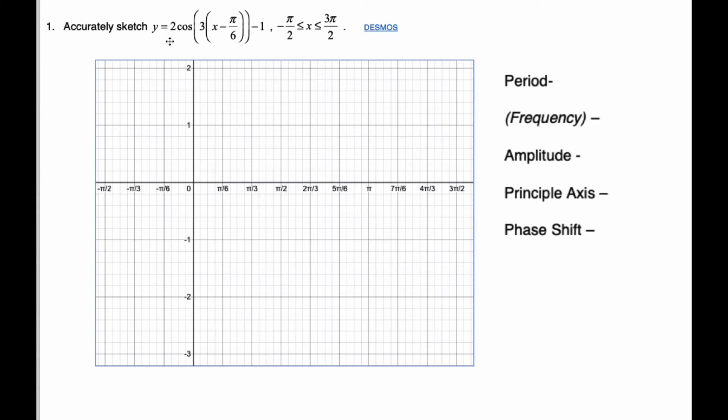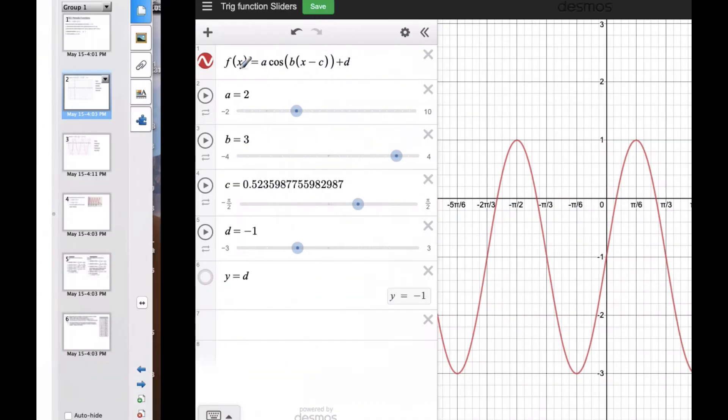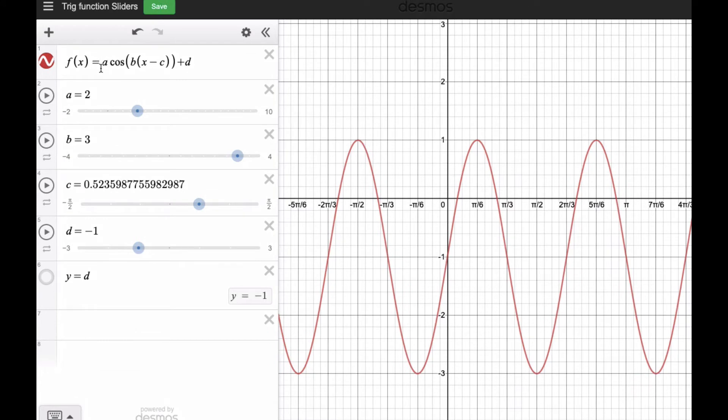So now if we consider this particular question, we're going to sketch y equals 2 cosine of 3x minus pi by 6 minus 1 over this interval. Well, we know if we look at this, let's go over to Desmos and see what we see. So here's our parameter, and I've already set up so it's 2.